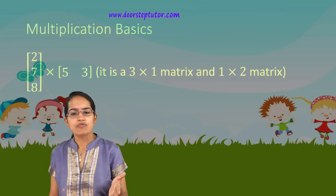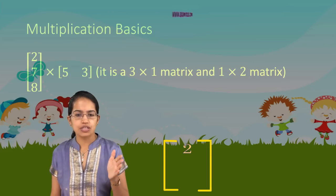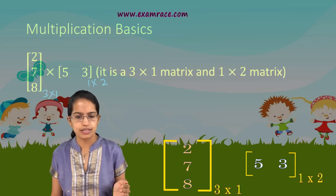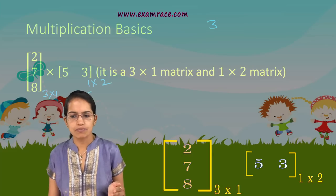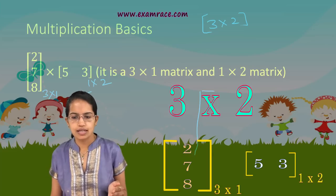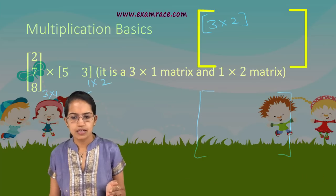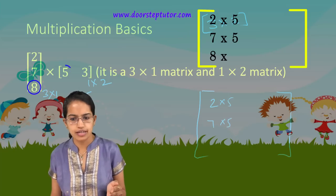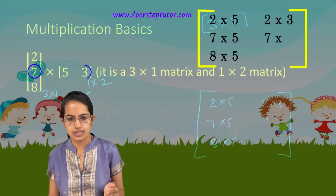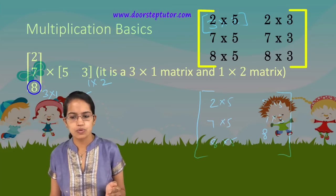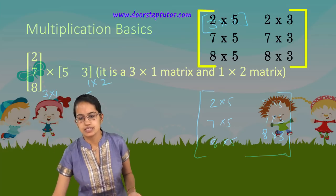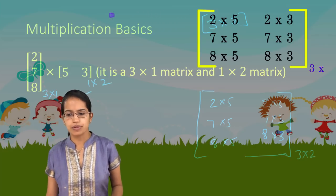Next, consider a 3×1 matrix multiplied by a 1×2 matrix. Since the inner dimensions are both 1, the resultant is a 3×2 matrix. The values are 2×5, 7×5, 8×5 for the first column, and 2×3, 7×3, 8×3 for the second column, giving a 3×2 resultant matrix.